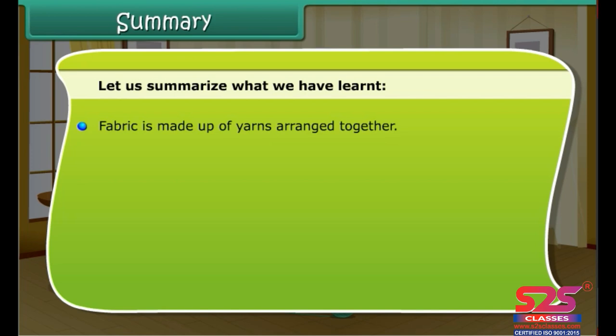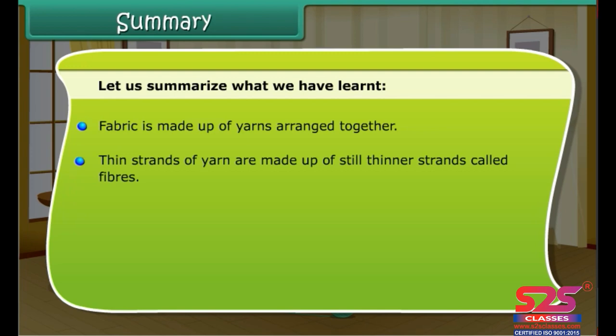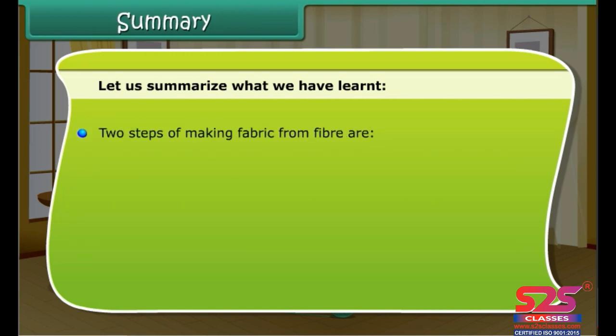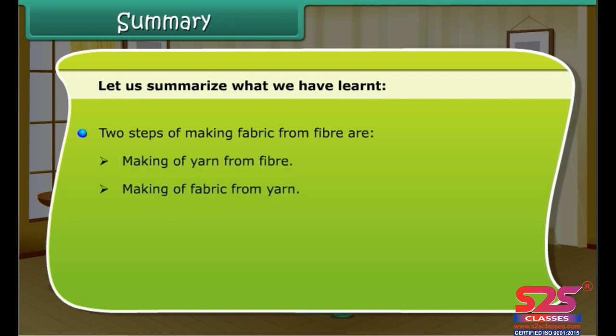Let us summarize what we have learned. Fabric is made up of yarns arranged together. Thin yarns are made up of still thinner strands called fibers. Fibers are of two types: natural fibers and artificial fibers. Cotton and jute fibers are obtained from cotton and jute plants respectively. Making fabric from fiber involves two steps: first, making yarn from fiber, and second, making fabric from yarn.